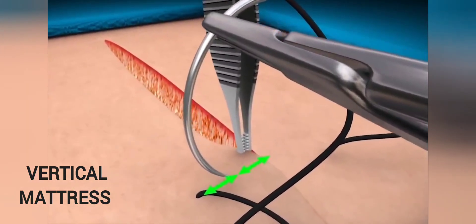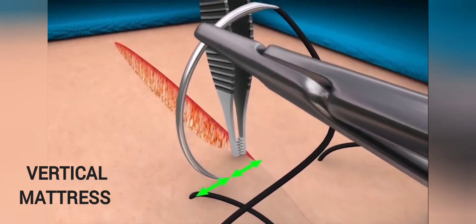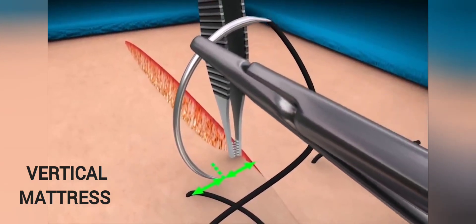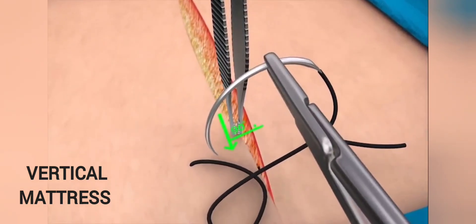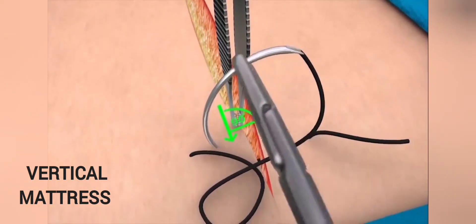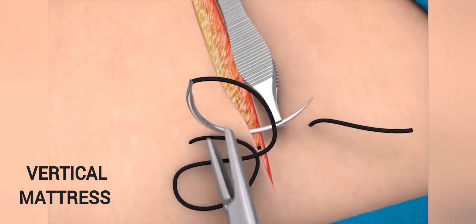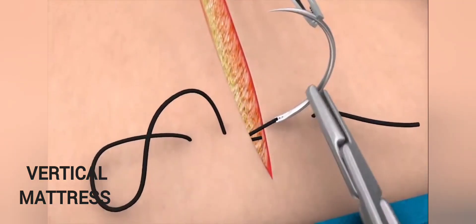Now take a small bite approximately halfway between the exit point and the skin edge. Using the backhand technique, enter the needle at 90 degrees to the skin and rotate the needle through the tissue by pronating the forearm.